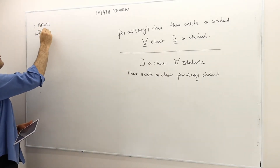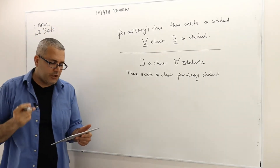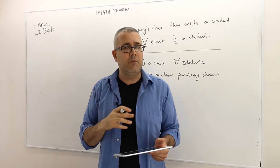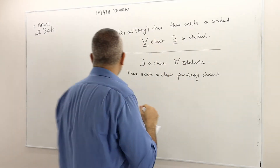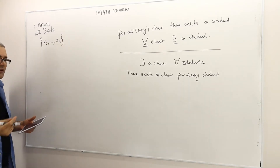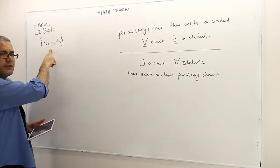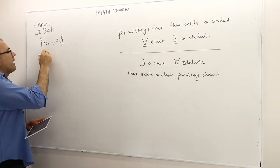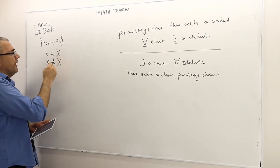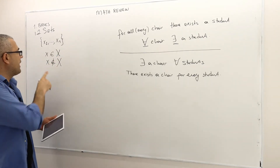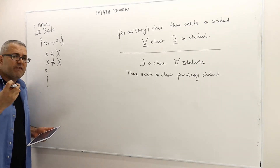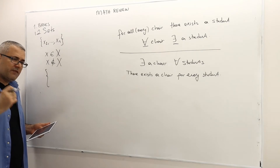As we know, a set is a collection of elements, and elements can be anything — it doesn't have to be a number. The elements can be completely abstract objects. So when I write something like {x1, ..., xn}, this is a set which contains elements x1, x2, all the way up to xn. When I say x is an element of X, it means x is a member of this set. And when I say x is not an element of X, that means x is not a member of this set — x is outside of this set.